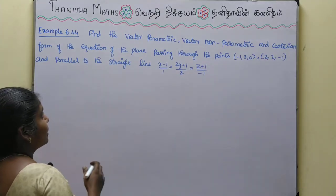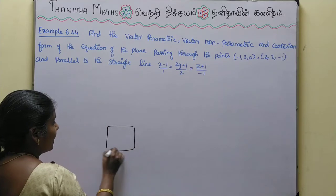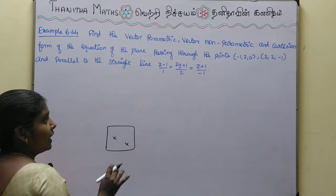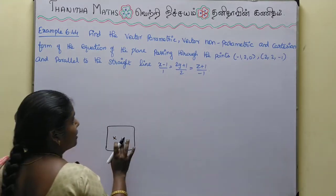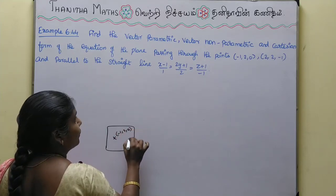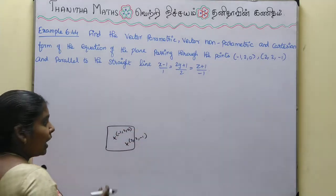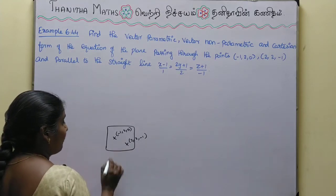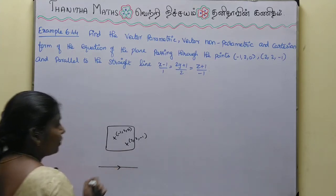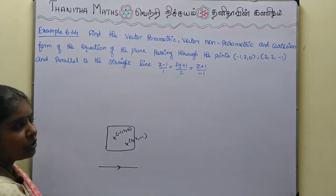So, what do we do for the plane equation? In this plane, there are 2 points. Point 1 is (-1, 2, 0) and point 2 is (2, 2, -1). Then we will use the line that the plane is parallel to, and put the line equation in standard partition format.